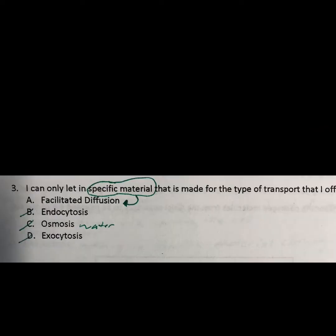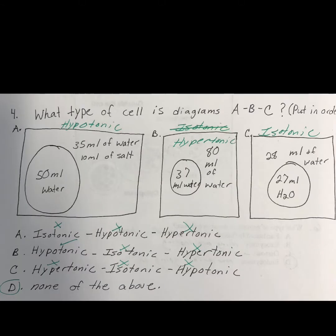I skipped number two because I had a super typo error in there, and I'm going to give y'all credit for that. Moving on to number three — it said 'only moves specific material.' The only thing dealing with specific material was facilitated diffusion. Endocytosis, osmosis moves water, and exocytosis moves materials as well, but specific. So that's your protein that's specific — if the protein is made up as a triangle, then only triangles can get through the protein through the cell membrane.